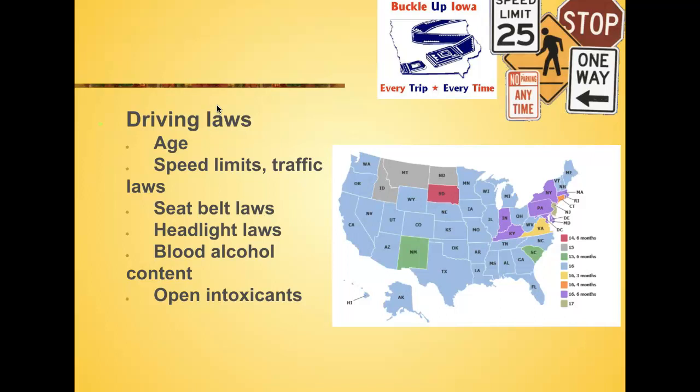Driving laws differ by state too. In South Dakota you can drive at age 14 and a half. Speed limits vary — Wisconsin's interstate speed is 70 mph; when the teacher lived in Oklahoma it was also 70, but Wisconsin was 65 at that time. In Texas the interstate speed is 70 mph but drops to 65 at night. Seat belt laws, fines, and blood alcohol content limits differ — in Oklahoma the BAC limit was 0.05, while in Wisconsin it is 0.08.